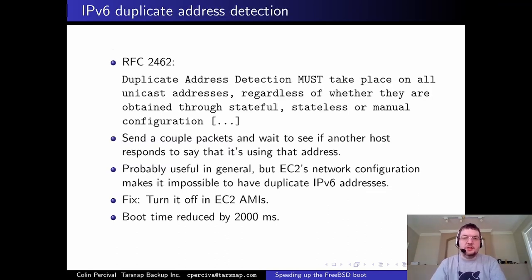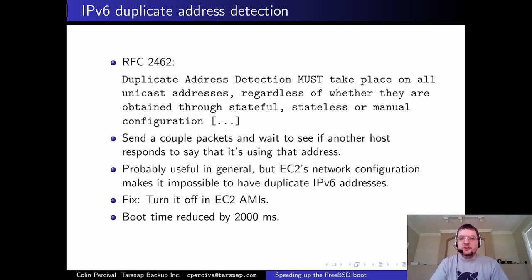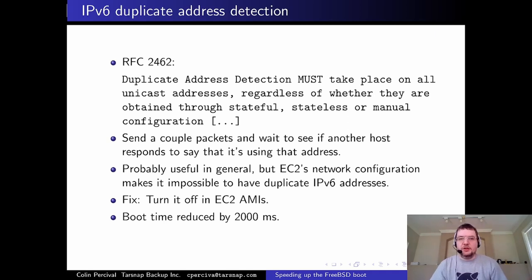RFC 2462 requires IPv6 duplicate address detection on all unicast addresses. When you configure an address, it sends packets asking if anyone else claims it, then waits. In EC2, duplicate IPv6 addresses are impossible because traffic is filtered at the network level. So I disabled duplicate address detection in EC2 images, and boot time sped up by two seconds.